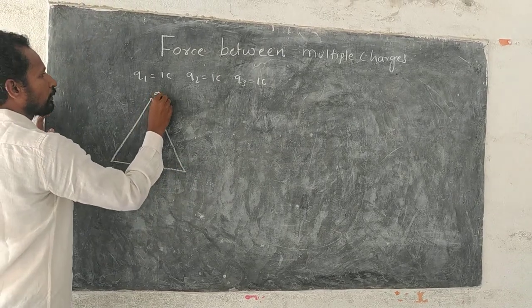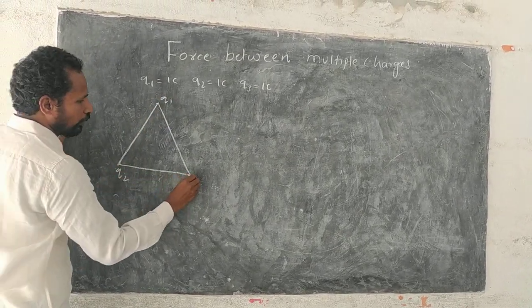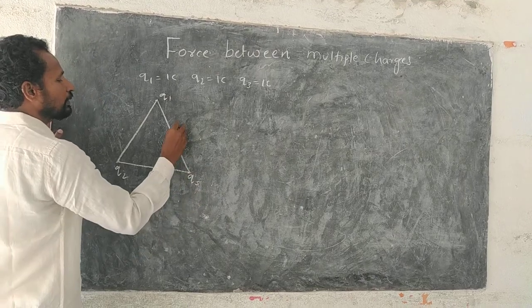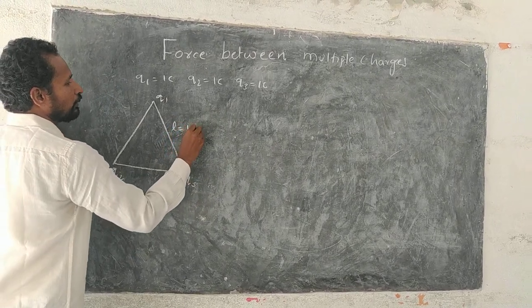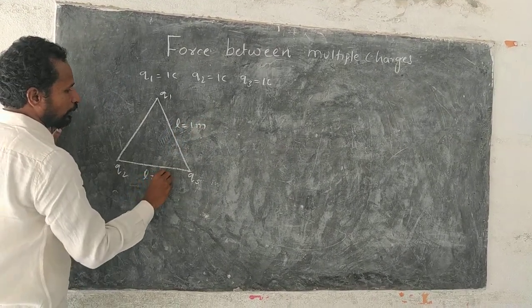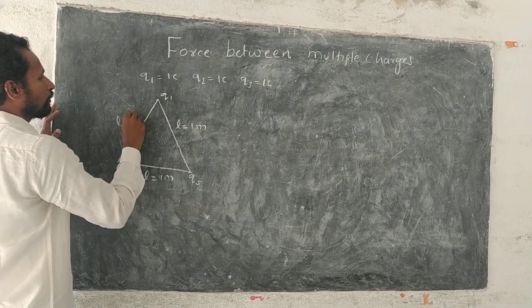Q1 at one corner, Q2 at one corner, Q3, and the side length is 1 meter, L equals 1 meter.